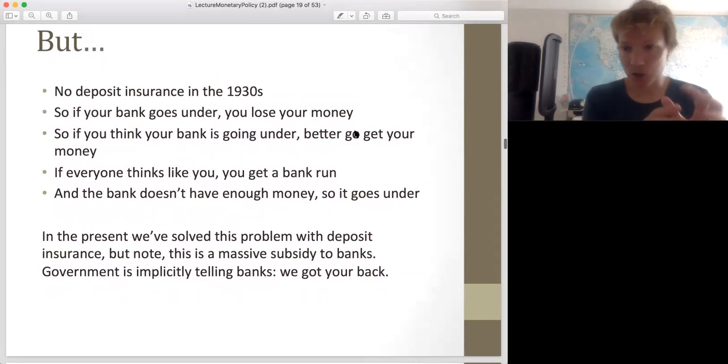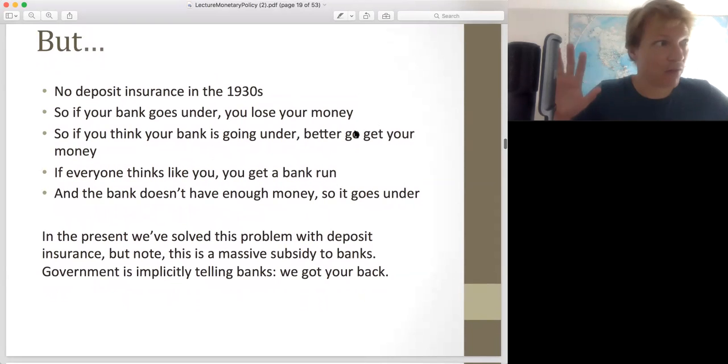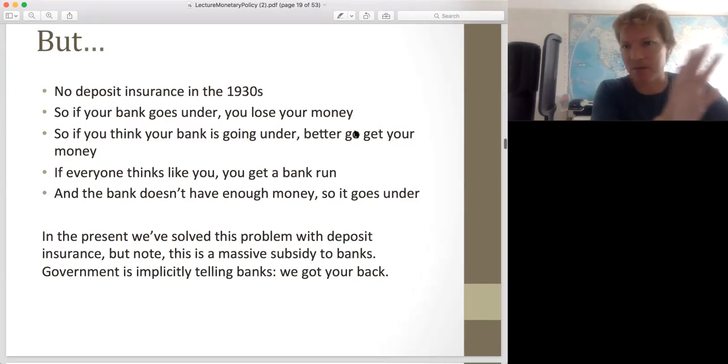So without the deposit insurance, what happens is when you see that the bank is failing, your incentive is to go and get your money as fast as you can. And so this creates what's called a bank run. Everybody realizes, oh no, the bank might go out of business. That induces everybody to go there. And then it's a self-fulfilling prophecy. Now that we've all gone there and asked for our money, now the bank will certainly go out of business. So that deposit insurance kind of acts as this buffer to get people to stop running to ask for their money back. And that kind of saves banks from going under.